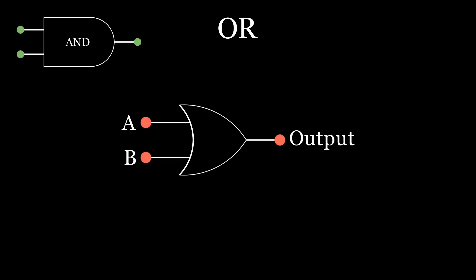The next logic gate I use a lot is the OR gate. It will turn on if either of the inputs are on. So, if A is on or if B is on, the output will be turned on.